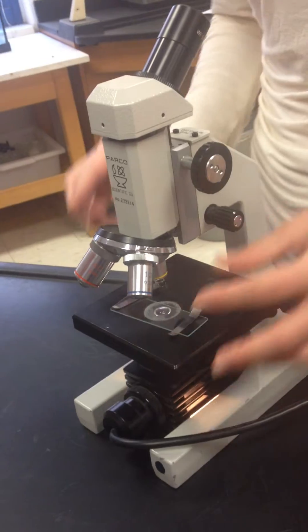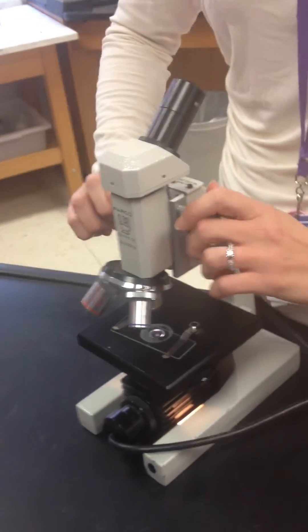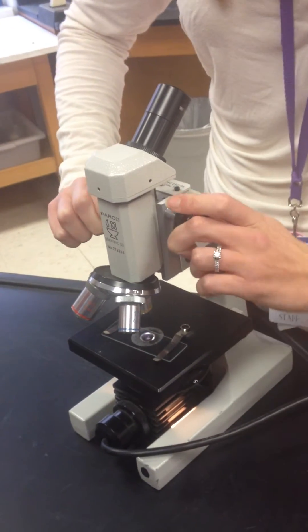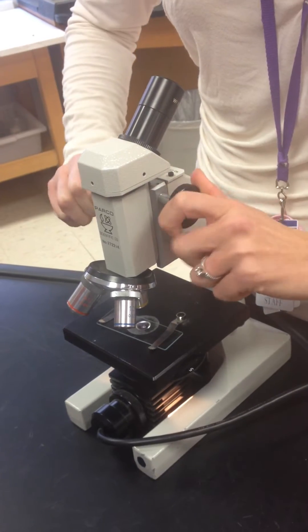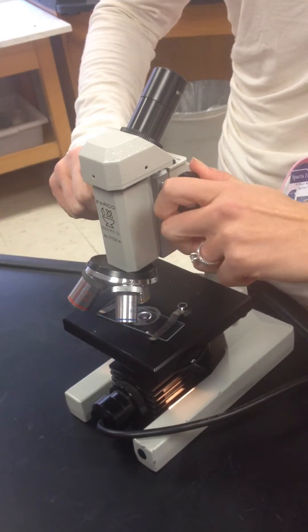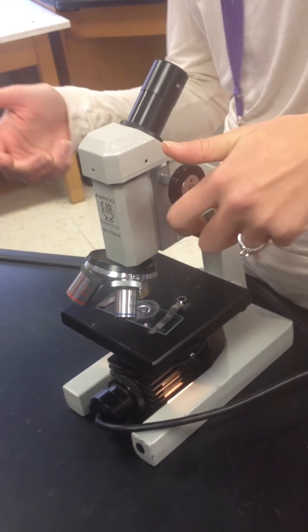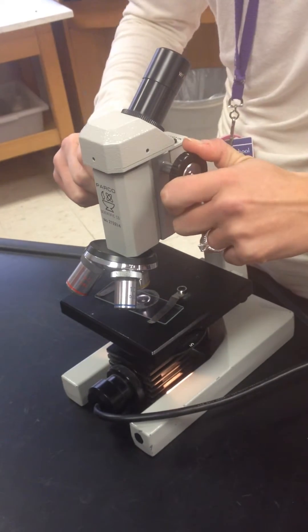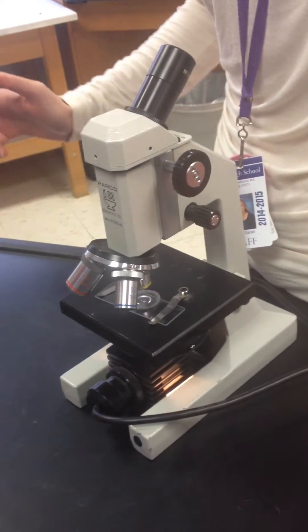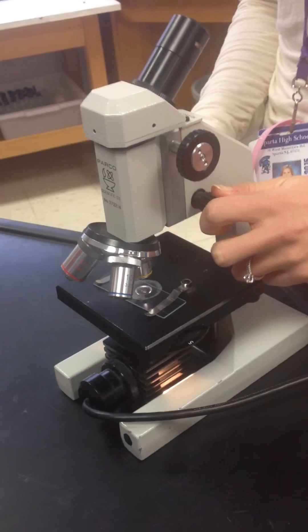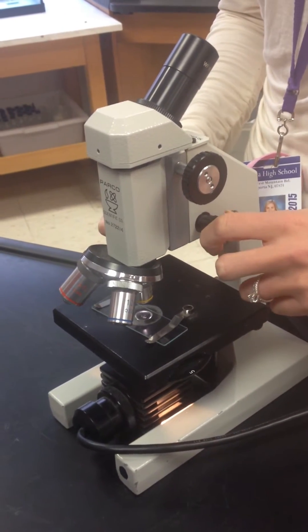You then are going to look through the microscope and focus it using the coarse adjustment knob first. Once it's as good a focus as it can be with the coarse adjustment knob, you're going to take your hands off of the coarse adjustment knob and make those last-minute fine-tuned adjustments with the fine adjustment knob.